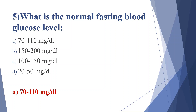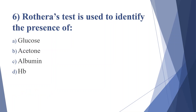Sixth question: Rothera's test is used to identify the presence of — option A: glucose, option B: acetone, option C: albumin, option D: hemoglobin. Answer is option B, acetone. Acetone is a ketone body; Rothera's test is used for detecting ketone bodies.